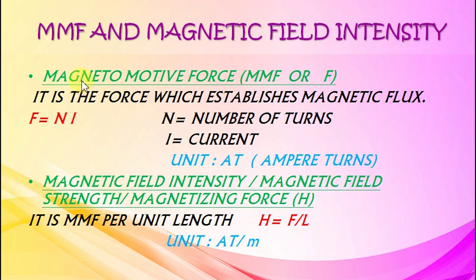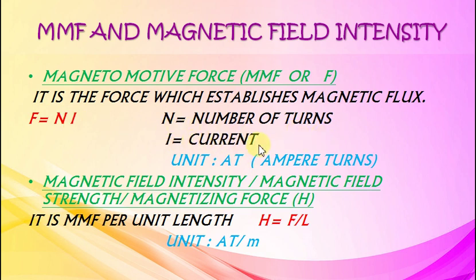Magnetomotive Force, MMF or F. It is the force which establishes magnetic flux. F equals Ni, where N equals number of turns and I equals current. The unit is Ampere turns.